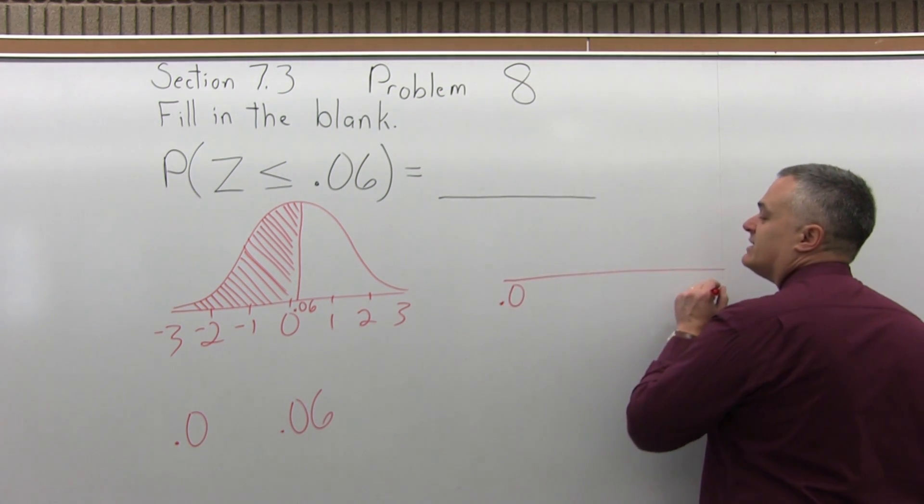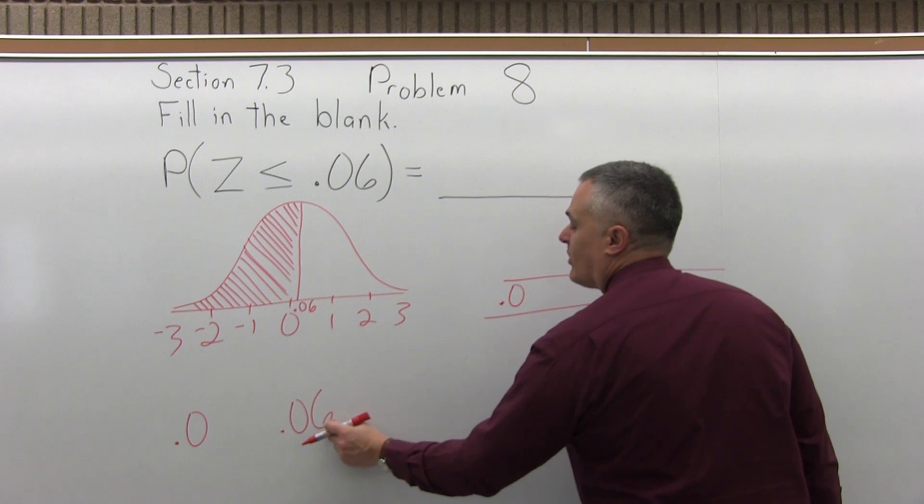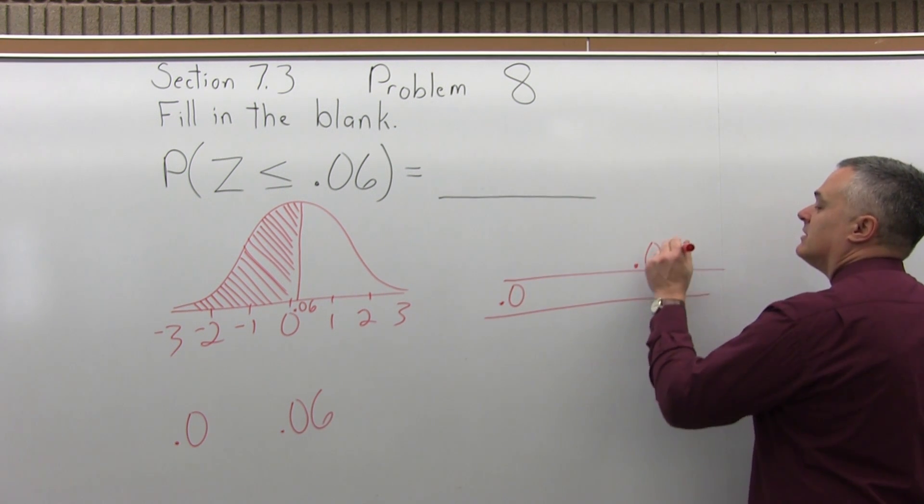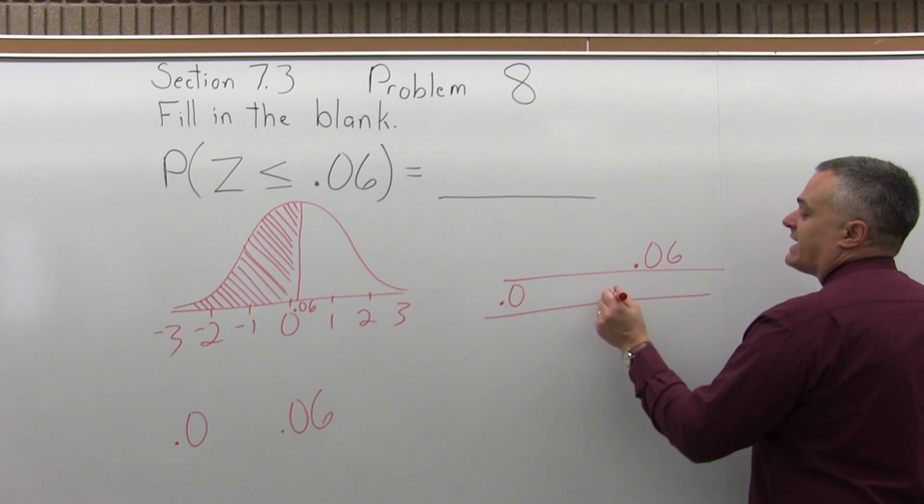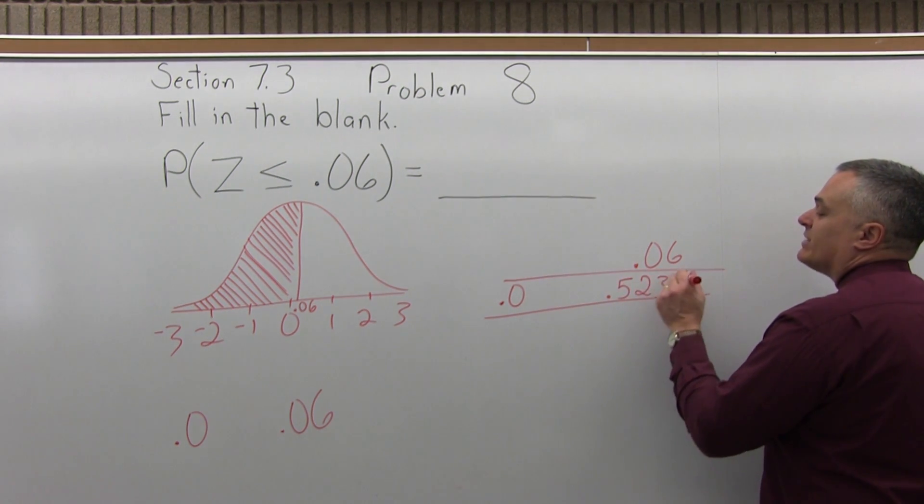And you want to see where it intersects with the 0.06 column. And those will intersect at 0.5239.